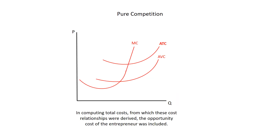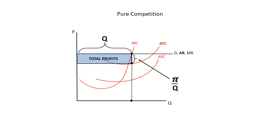In computing total costs, from which these cost relationships were derived, the opportunity cost of the entrepreneur was included. Because these cost curves reflect both cash outlays and the entrepreneur's opportunity cost, the profits shown on this graph are economic profits. Entrepreneurs eager to earn economic profits, coupled with the absence of any barriers to entry, will cause resources to flow into this industry. With all these additional firms producing this good or service, the market supply will increase and the market price will fall, causing the demand curve and all the revenue curves to shift down to the new lower price.